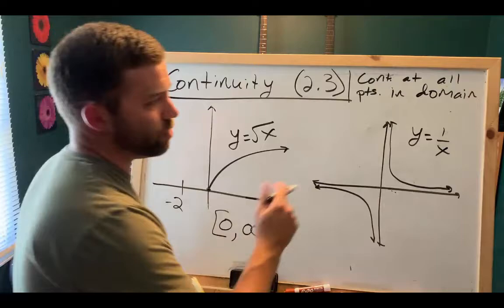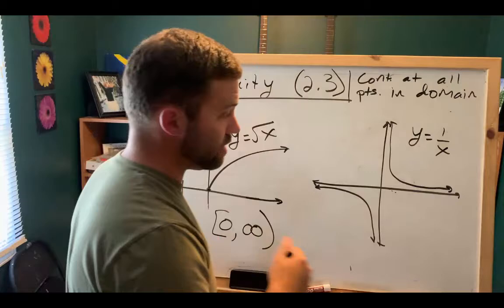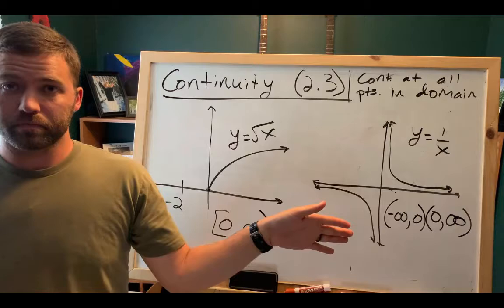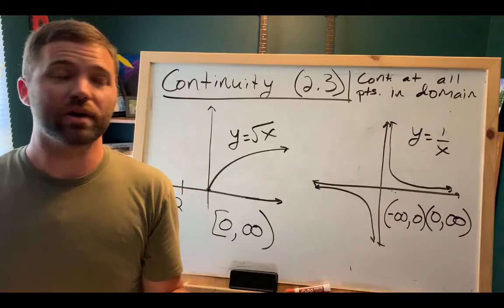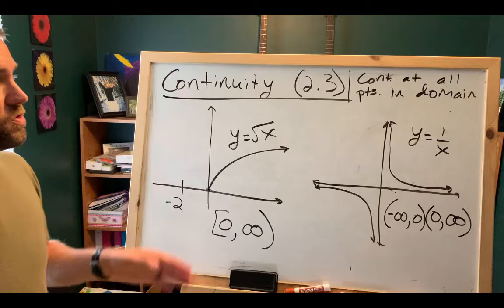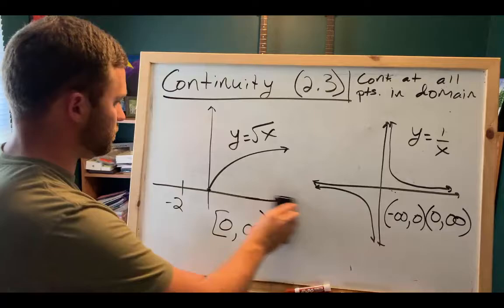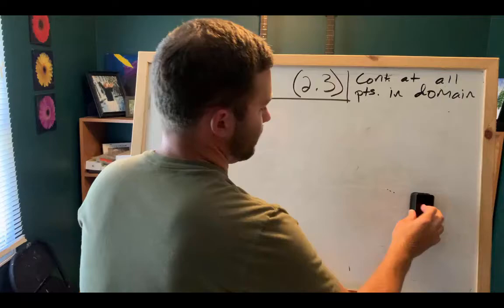What is the domain of 1 over x? It is all real numbers except for 0 — you could write that as negative infinity to 0, not including 0, then 0 to infinity. It is continuous at every point in the domain. It's only when we look at x equals 0, which is not in the domain, that we find a discontinuity. So 1 over x is a continuous function.